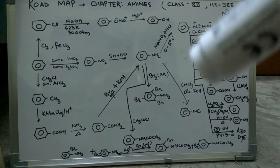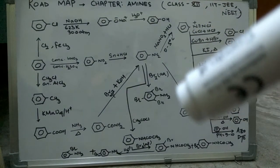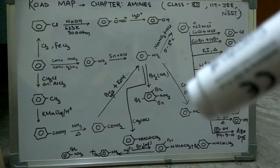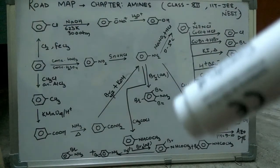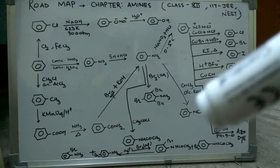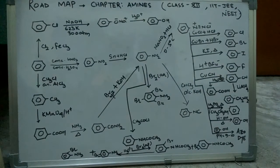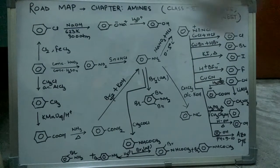As we have aniline here, upon application of CHCl3 with alcoholic KOH, we get the isocyanide group, which is NC.